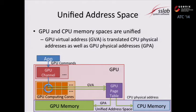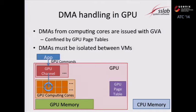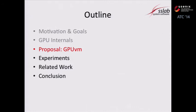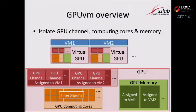DMA is executed with GPU virtual addresses, represented as memory copies between GPU virtual addresses. When addresses are translated to GPU and CPU physical addresses, DMA is executed. Memory access by DMA is also confined by the GPU page table. Virtualization needs to isolate these DMAs. GPU VM provides multiple virtual GPUs on top of a single physical GPU, logically partitioning physical channels and GPU memory, and isolating performance on computing cores by time sharing.